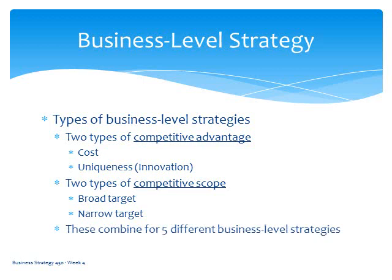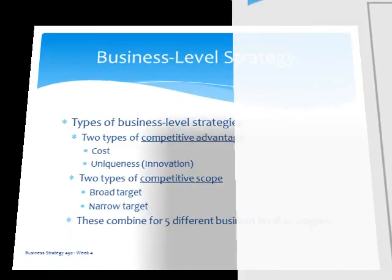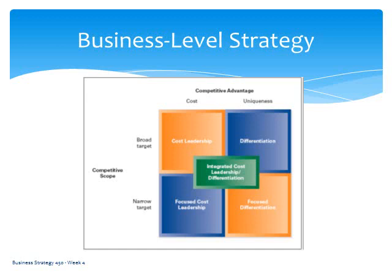These four elements actually combine into five different business-level strategies. In the book, there's an illustration of these five: cost leadership, differentiation, focused cost leadership, focused differentiation, and integrated cost leadership and differentiation.